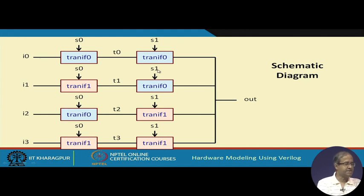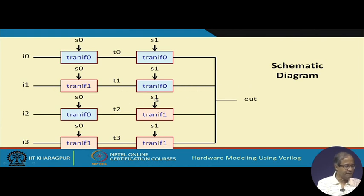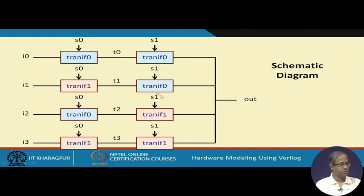Suppose S1 is 0 and S0 is 1, then I1 should be selected — that is why we used a TRANIF1 switch there. If S0 is 1 and S1 is 0, then I2 is selected, and if both are 1 then I3 is selected. So depending on the value of S0 and S1, exactly one row is selected and that input gets connected to the output.